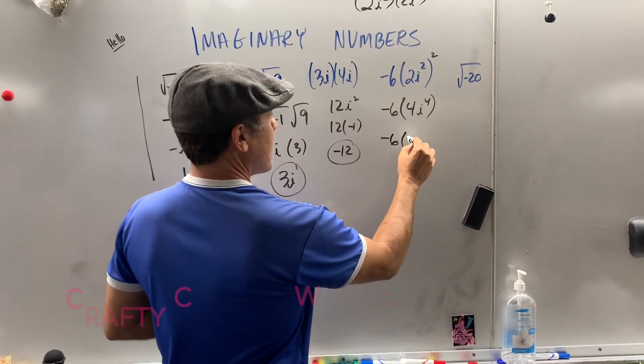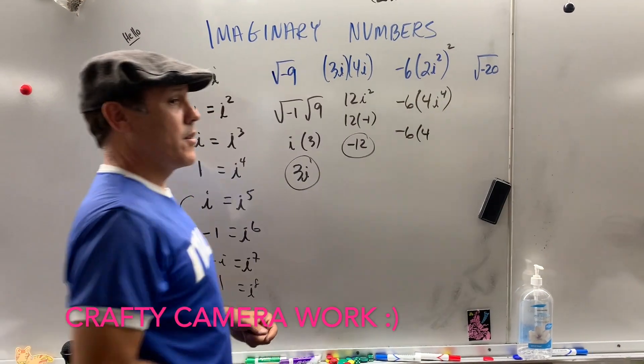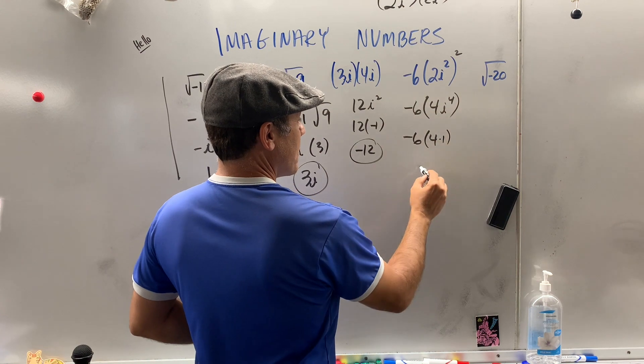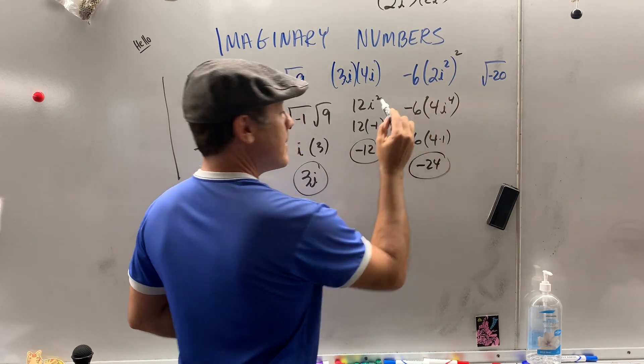Negative 6 times 4. What is i to the fourth? Let's zip over here. i to the fourth is 1. So we end up with negative 24.